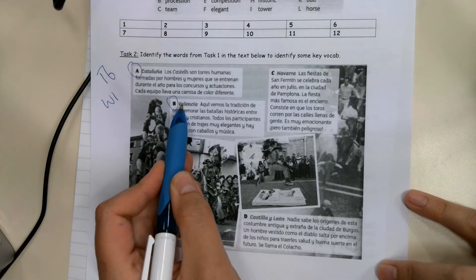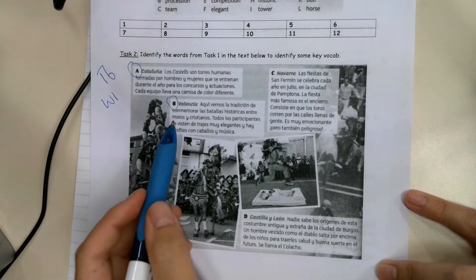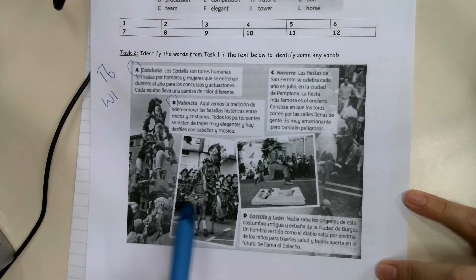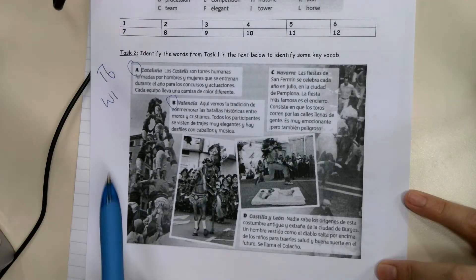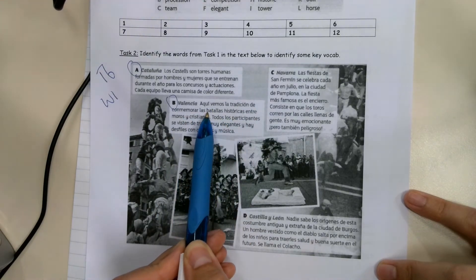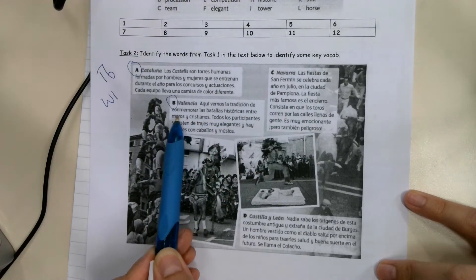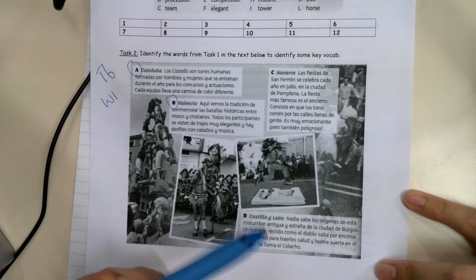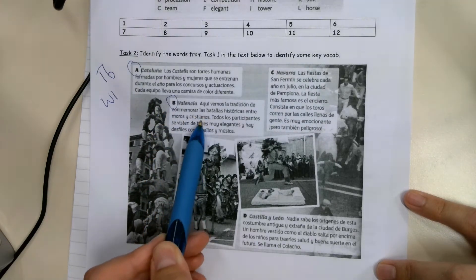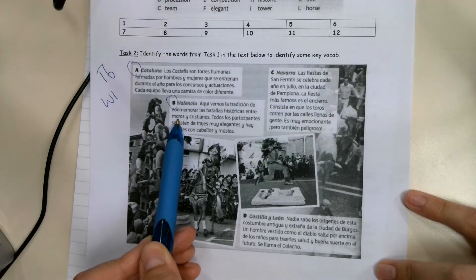B was in Valencia, that's in the east of Spain, but a little bit further down, on the eastern coast. That's what this picture is referring to. Now I didn't actually know about this festival, I've not heard very much about this at all. But it says here we see the tradition of commemorating the historical battles between the Moors and the Christians. So this has a little bit of history with it. The Moors are the people that came over from North Africa. They used to occupy Spain before it became Christian, so there's obviously some historical conflict there.